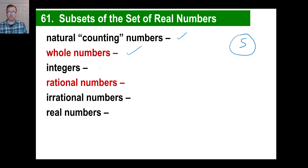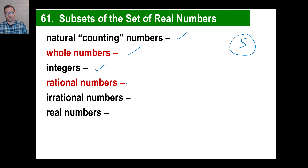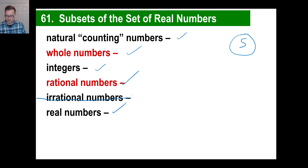Integers — look at your picture of integers on your card. Is 5 going to be on there? Yes, it will. Rational number — can you make a fraction out of 5? Yes, you put it over 1. By definition, it's not irrational. Is 5 a real number — is it on the number line? Yes, it is. So 5 is part of five different subsets.